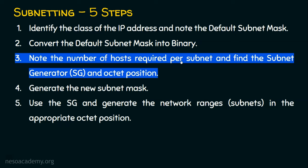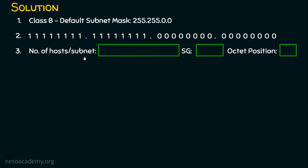Let's move on to step number three. Here we note the number of hosts required per subnet as given in the question, and find the subnet generator and the octet position. The question states 500 hosts required per subnet. To find the subnet generator and octet position, we need to first convert 500 into binary, which gives us 111110100 — nine bits. We cannot represent the decimal number 500 without nine bits, so nine binary bits are compulsorily required.